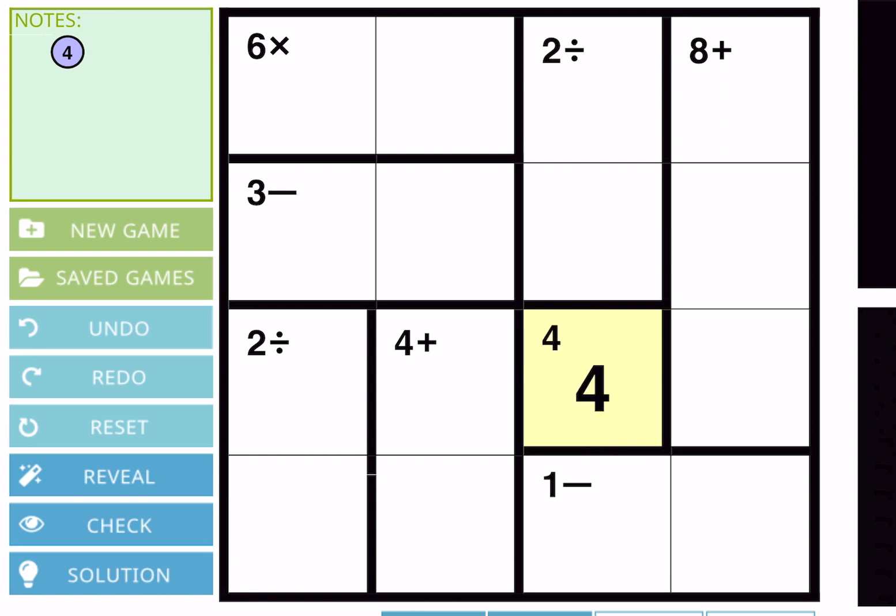And now we don't know—there should be three and one, so we don't know where three and one is going to be placed, so we are just going to note it down. And over here there is two combinations.